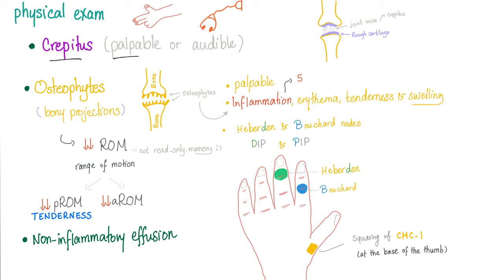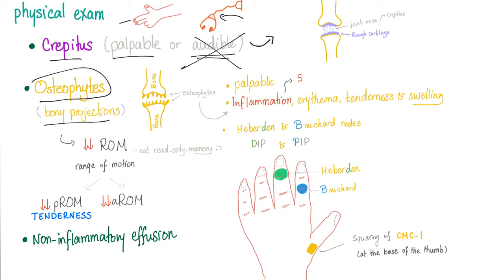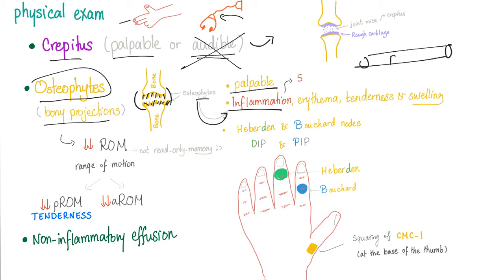On physical exam, you'll find crepitus — which is both palpable and audible. Next, we have osteophytes, which are bony projections. You may remember the subchondral sclerosis and eburnation. Osteophytes can lead to local inflammation — not systemic inflammation like in rheumatoid arthritis — and you can find erythema, tenderness, and swelling due to this local inflammation.